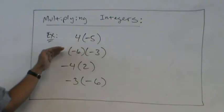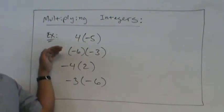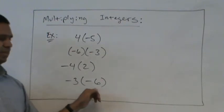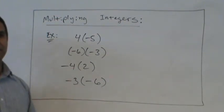Four times negative five, negative six times negative three, negative four times two, negative three times negative six. So work those out quickly. Check with your partner when you're done. See if you agree.